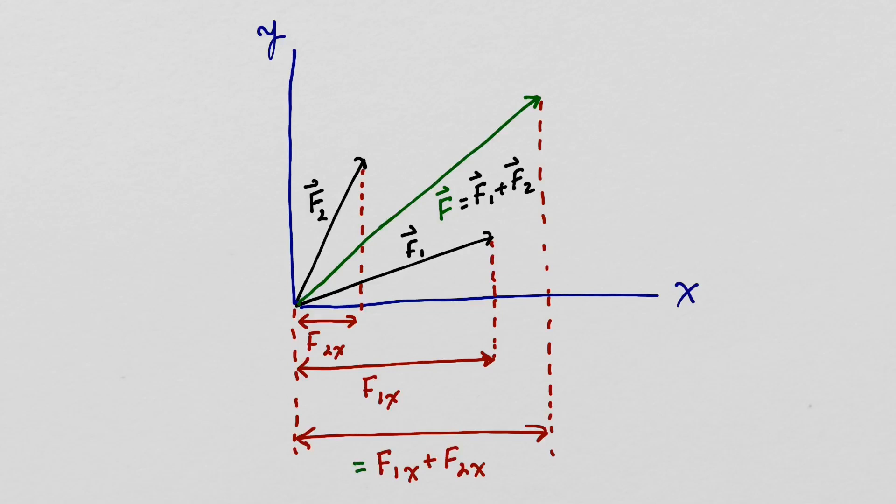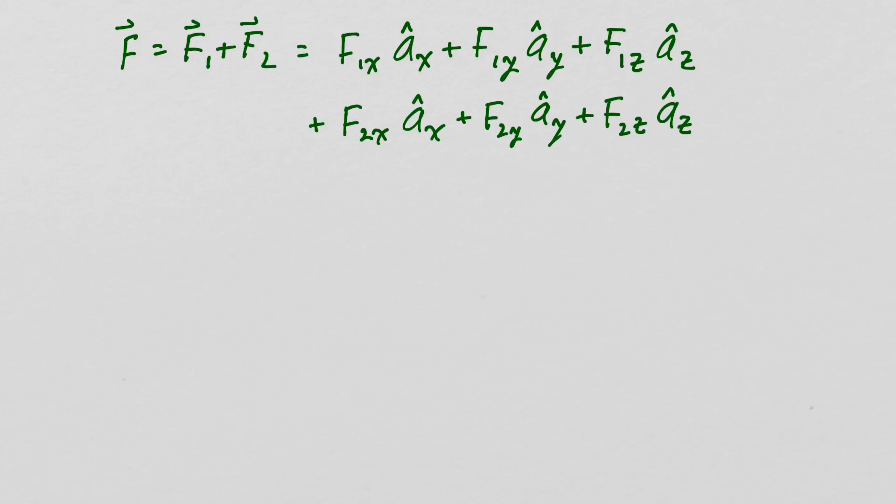If we write F1 and F2 in component form, then the sum of F1 and F2 are just the sums of each individual component.